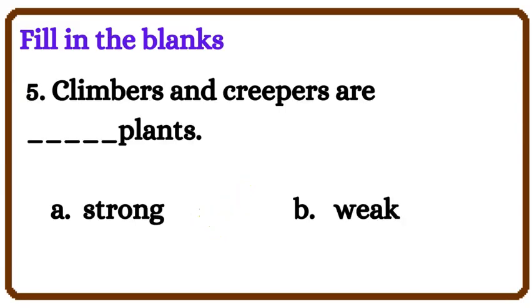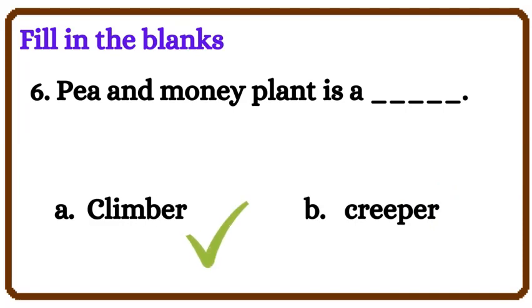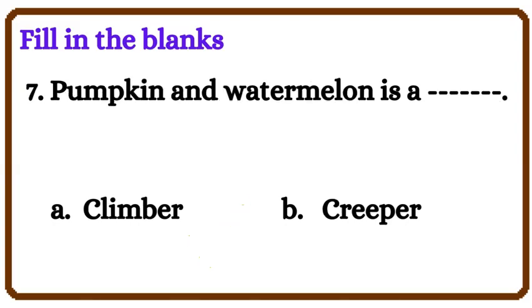Climbers and creepers are weak plants. Pea and money plant is a Climber. Pumpkin and watermelon is a Creeper.